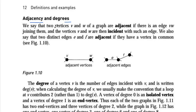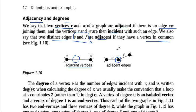Two vertices v and w of a graph are adjacent if there is an edge v-w joining them — they have one common edge, so they are called adjacent vertices. We also say that two distinct edges e and f are adjacent if they have a vertex in common. Adjacent means near — nearer vertices have one common edge joining them, and adjacent edges have one vertex in common between two edges.